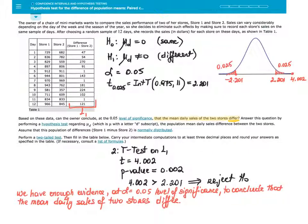Based on these data, can the owner conclude, at the 0.05 level of significance, that the mean daily sales of two stores differ? Answer this question by performing a hypothesis test regarding mu sub d, which is mu with the letter d subscript, meaning mean of the differenced data. The population mean daily sales difference between the two stores.